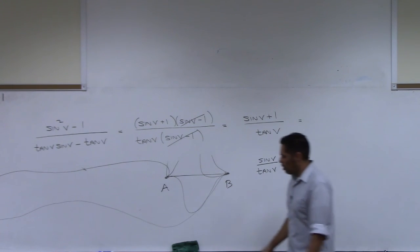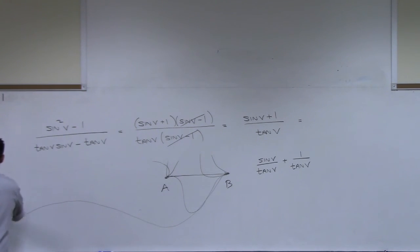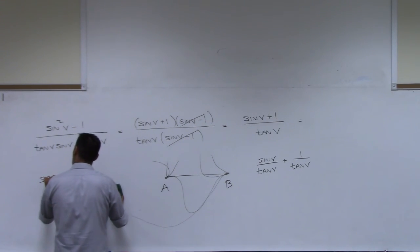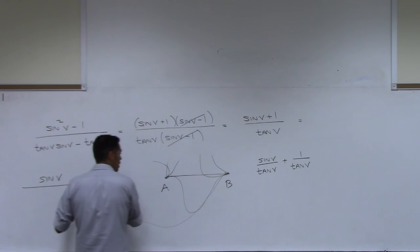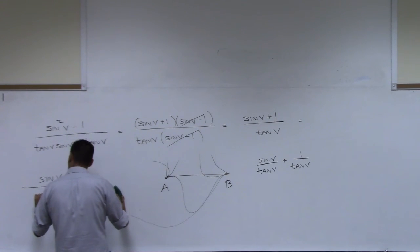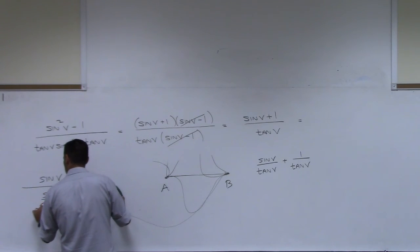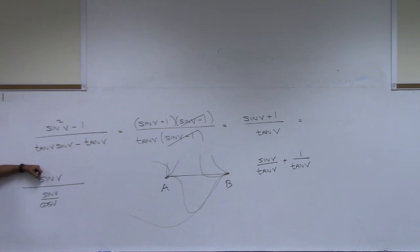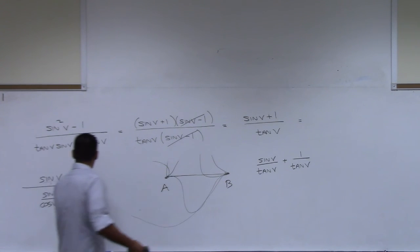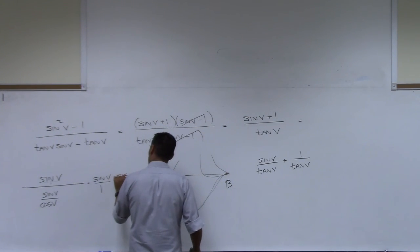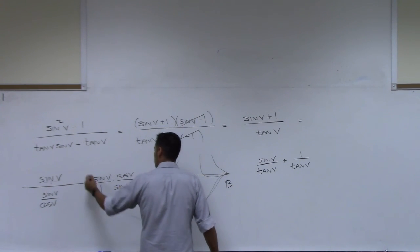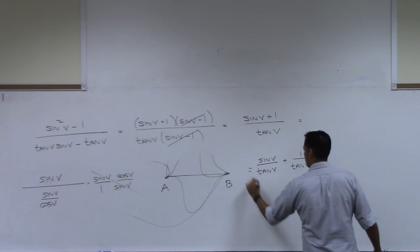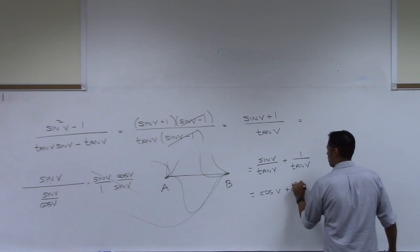For sine v over tangent v: tangent v is sine v over cosine v, so sine v over (sine v over cosine v) equals sine v over 1 times cosine v over sine v, and the sines cancel, giving cosine v. So the final simplified expression is cosine v plus cotangent v — that's probably about as clean as we can get it.